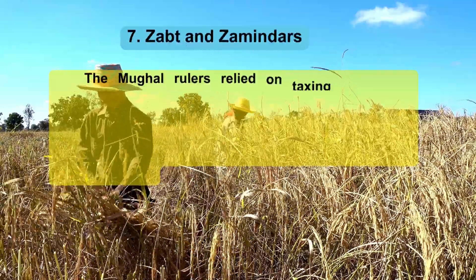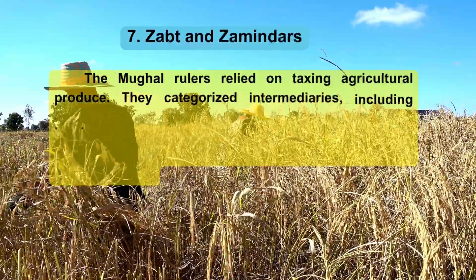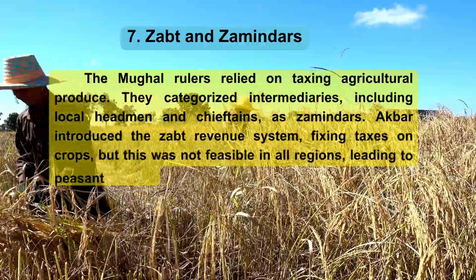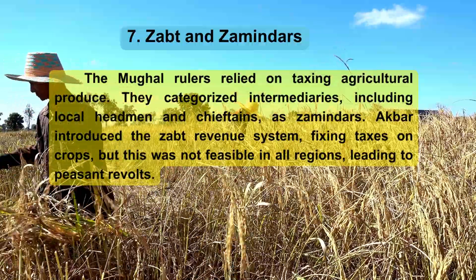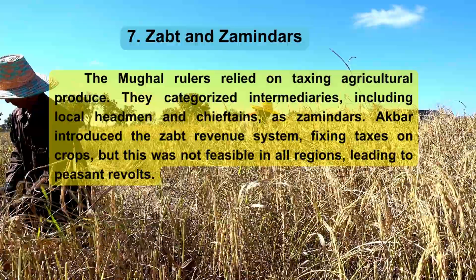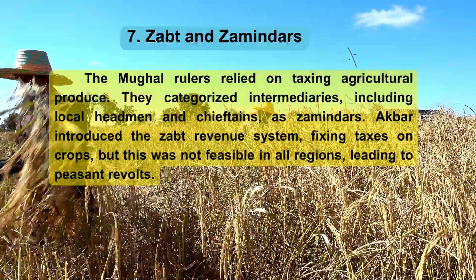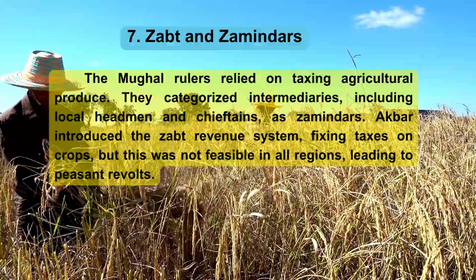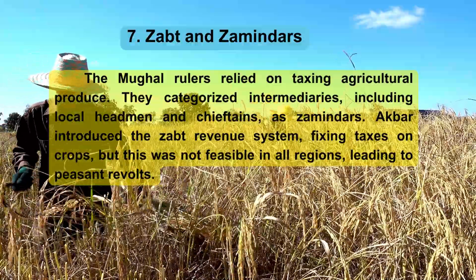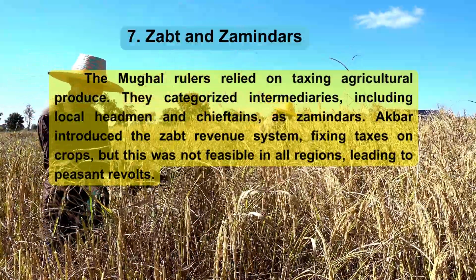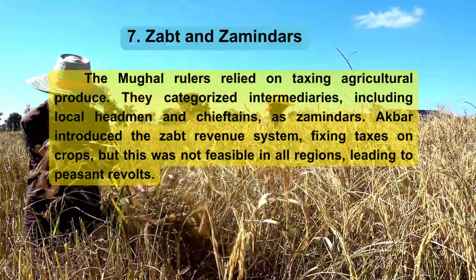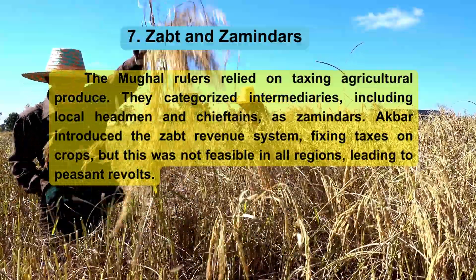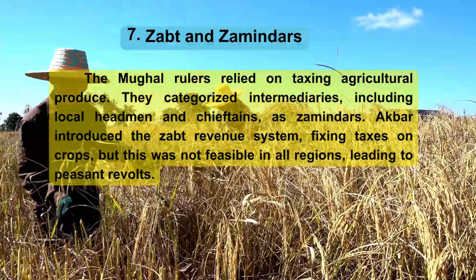7. Zabt and Zamindars. The Mughal rulers relied on taxing agricultural produce. They categorized intermediaries, including local headmen and chieftains, as zamindars. Akbar introduced the Zabt revenue system, fixing taxes on crops, but this was not feasible in all regions, leading to peasant revolts.